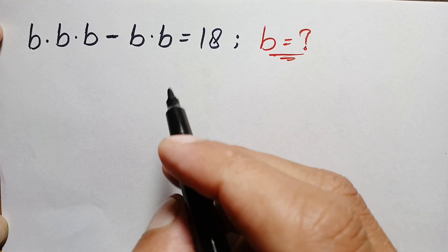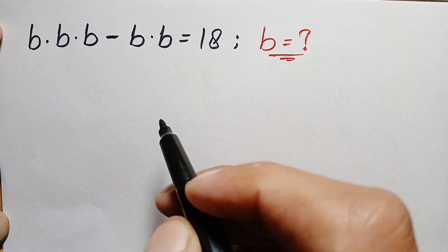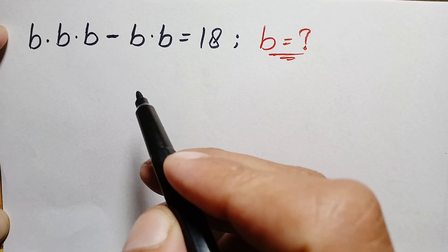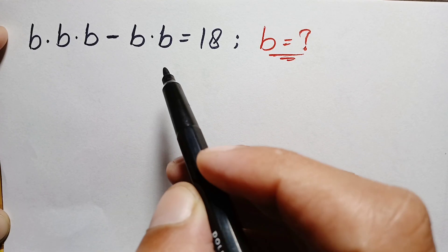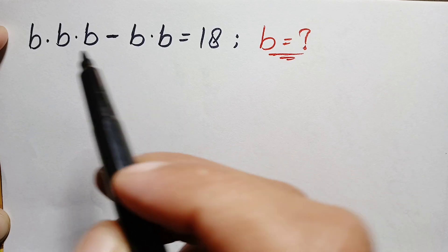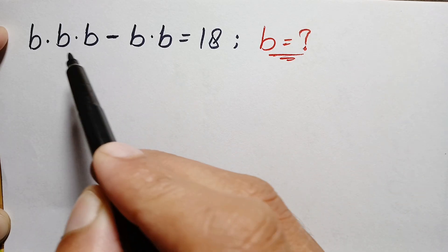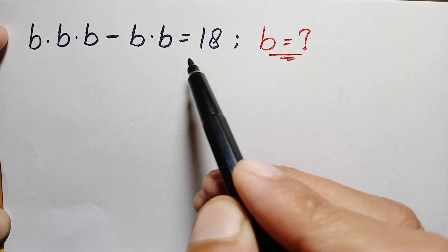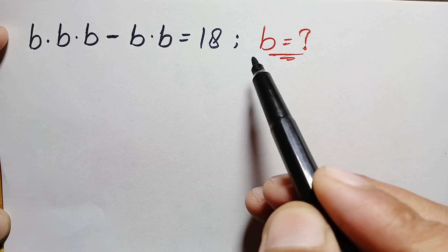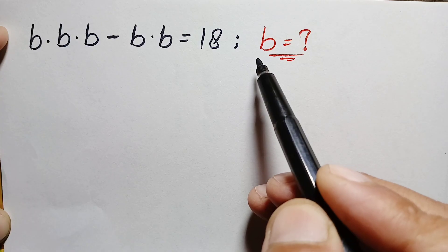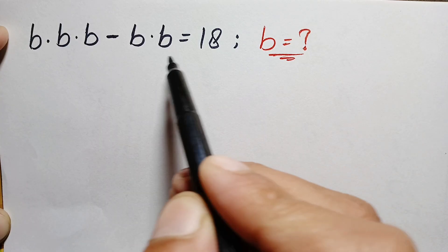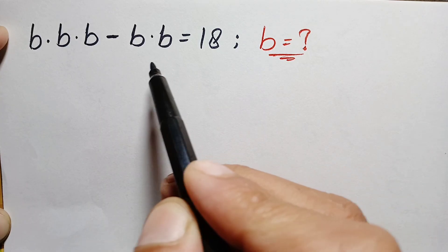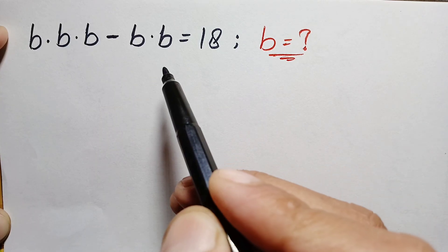Hello everyone, you are welcome. Today we have a very interesting algebra math problem, which is b times b times b minus b times b is equal to 18. We will try to find out the value of b and all possible solutions of this algebra math problem. Let's start our solution.